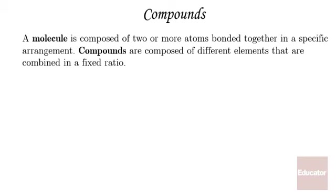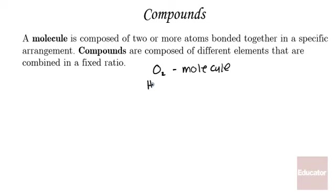A molecule is composed of two or more atoms bonded together in a specific arrangement. Compounds are composed of different elements that are combined in a fixed ratio. O2 is two oxygen atoms bonded together — these form a molecule. However, since these are the same type of atom, this is not a compound. An example of a compound would be H2O or water, which is two atoms of hydrogen bonded to one atom of oxygen. This is a molecule of water and it is also a compound.